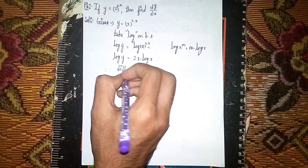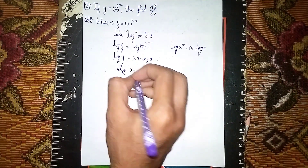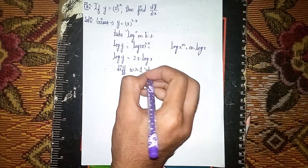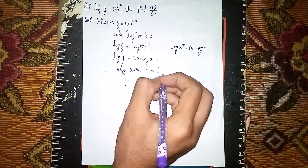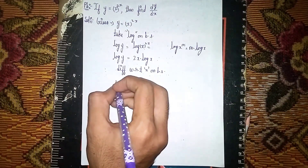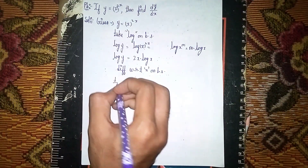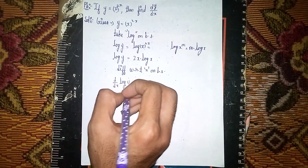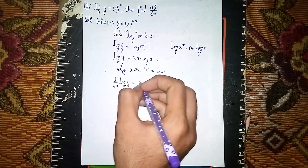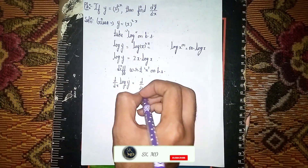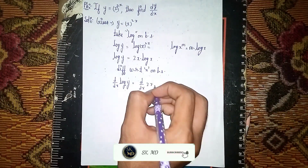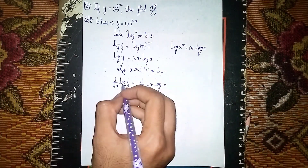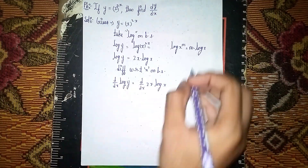Now differentiate both sides with respect to x. So we take d/dx of log y on the left, and d/dx of 2x into log x on the right.